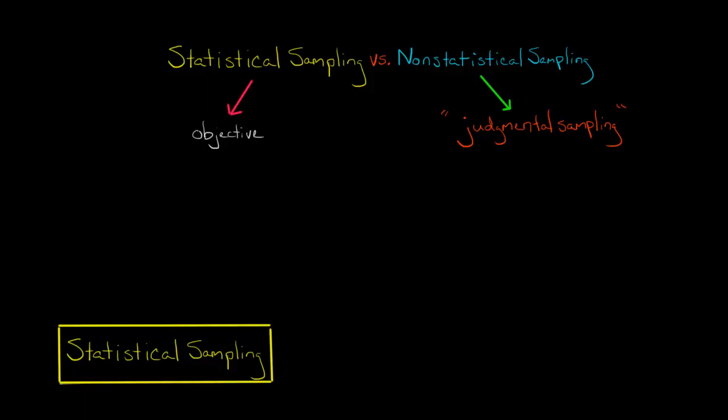There are two general approaches to audit sampling: statistical sampling and non-statistical sampling. They both rely on the auditor's judgment to some extent. However, statistical sampling is based on the laws of probability and tends to be a lot more objective than non-statistical sampling, which is based more on the auditor's judgment.